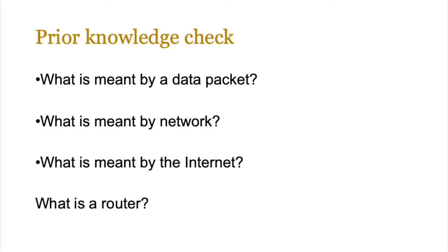A data packet is when a message is split up into smaller groups of bits for transmission over a network. A network is basically a connection of devices which allow you to share information, and there are different types of networks such as client-server, peer-to-peer, and lots of different topologies. The internet is a connection of networks which is global, and a router is basically a device which enables data packets to be routed between different types of networks.